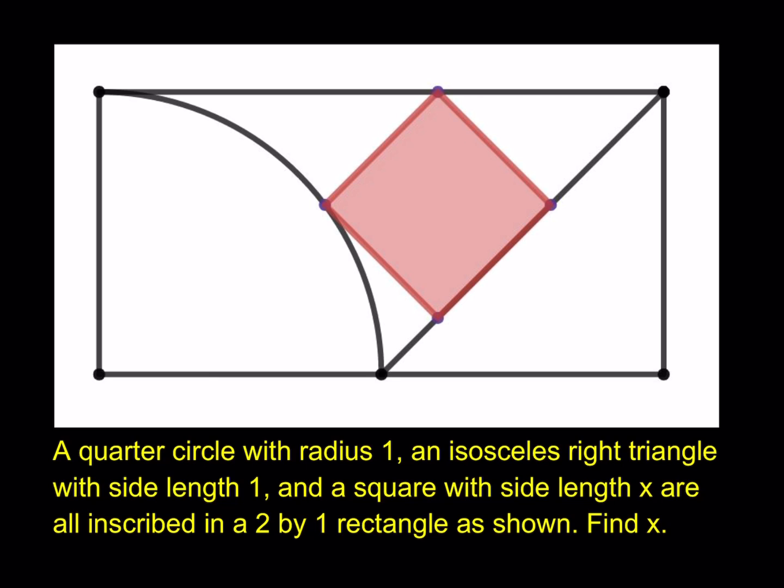So we have a quarter circle with radius 1, an isosceles right triangle with side length 1, and a square with side length x. They're all inscribed in this rectangle which is 2 by 1. So the base is 2, the height is 1, and we have a quarter circle, an isosceles right triangle which is 45-45-90, and that little square is inscribed. We had a similar puzzle before with a circle, so I'm going to link that video in the description. So what are we going to do?